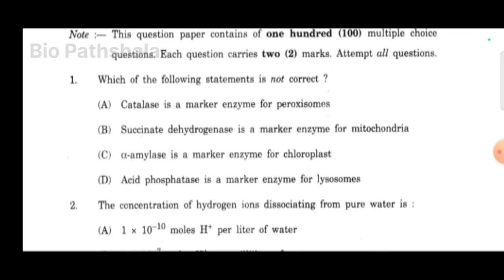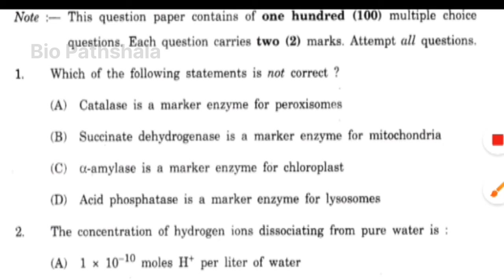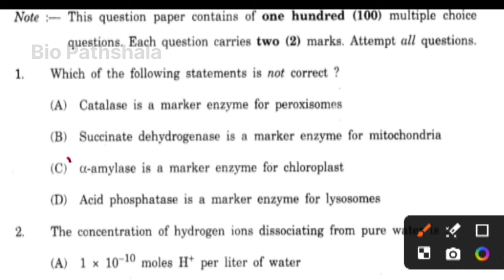The first question is: which of the following statement is not correct? The correct option is option number C, i.e., alpha amylase is a marker for chloroplast. So, that option is not correct.